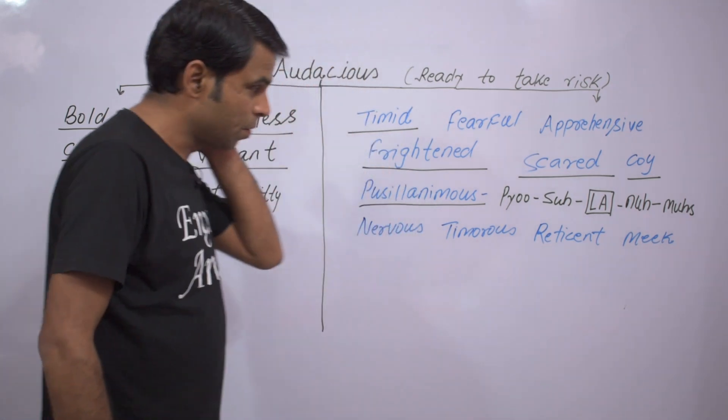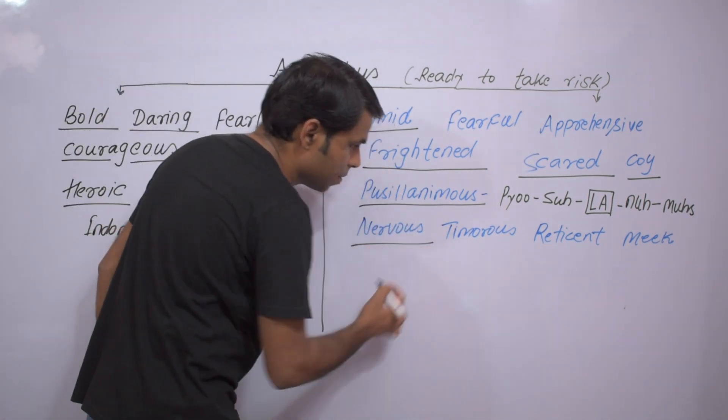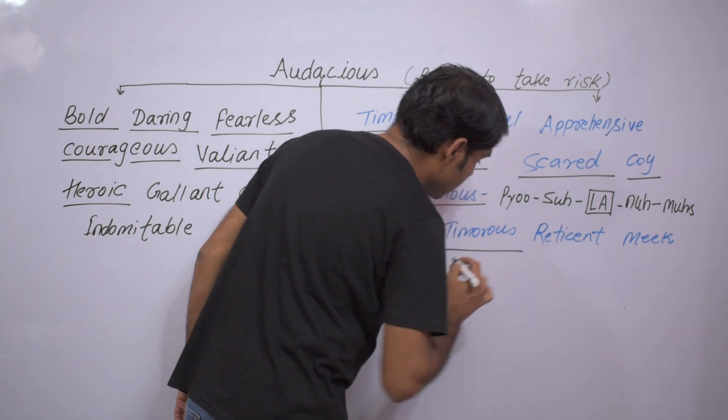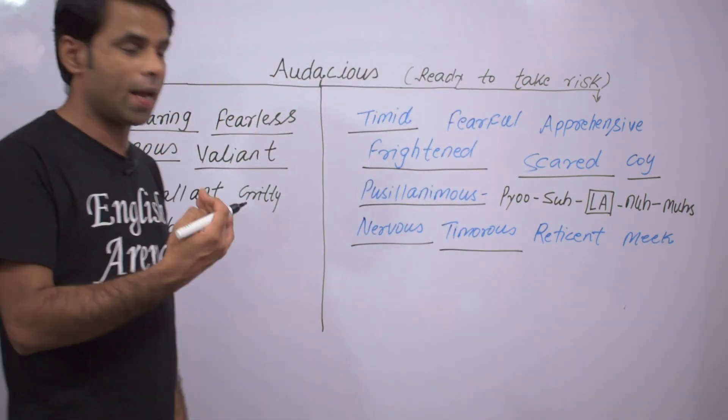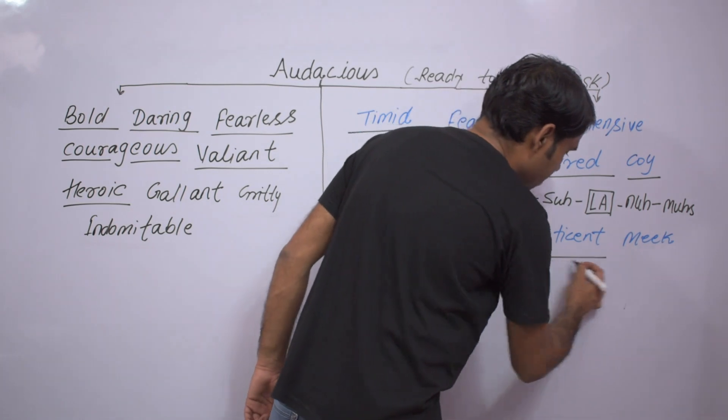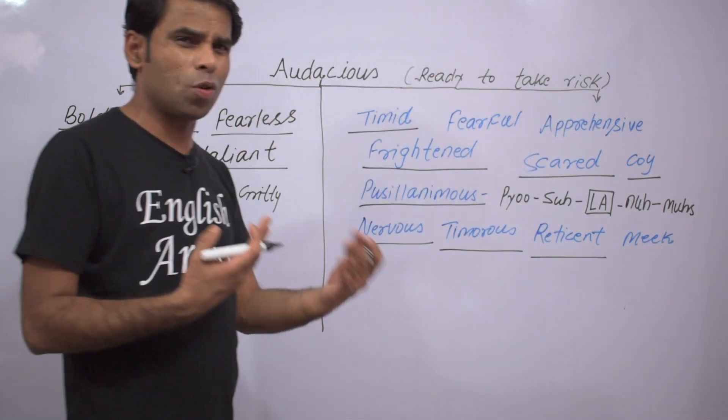Next word is nervous, or timorous - t-i-m-o-r-o-u-s, timorous, or reticent - someone who doesn't want to talk about his past, or meek.